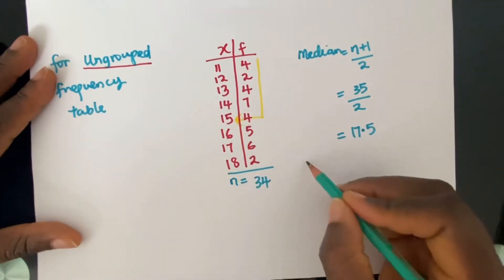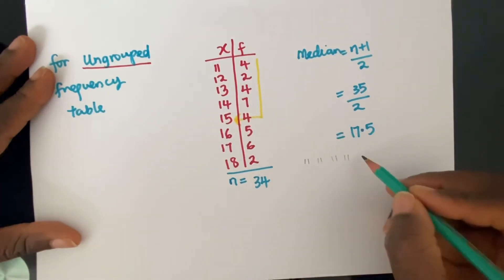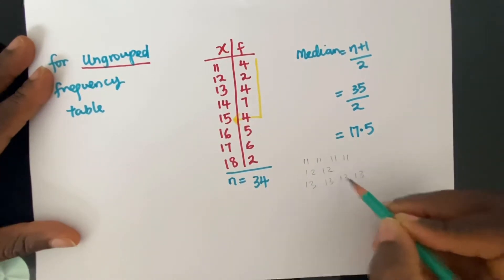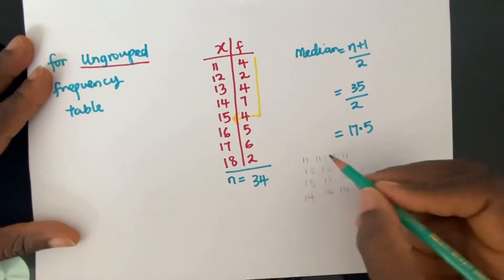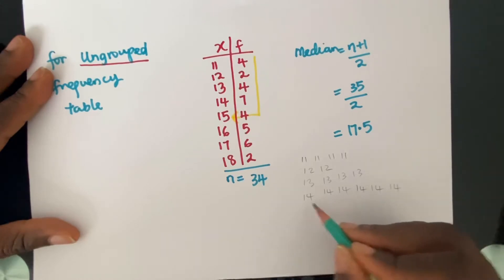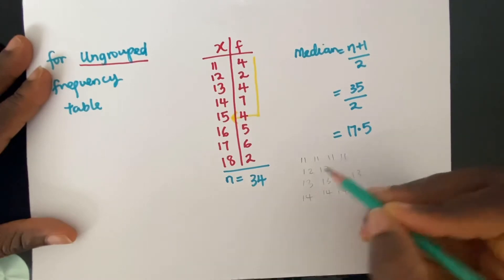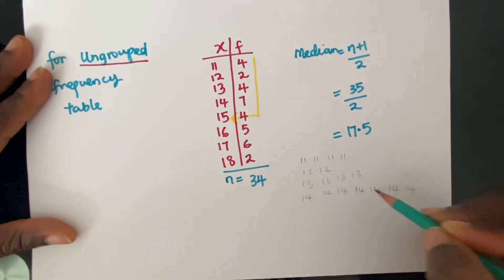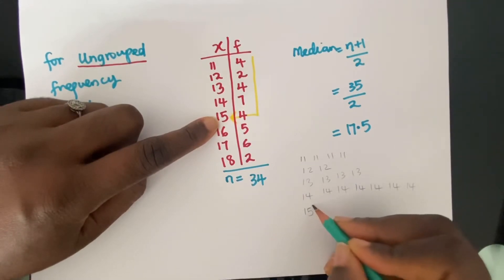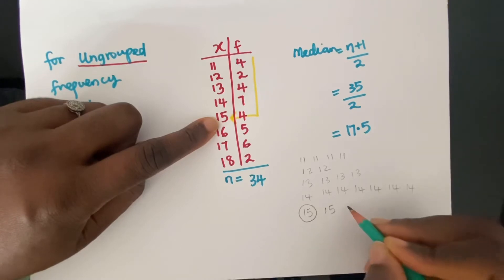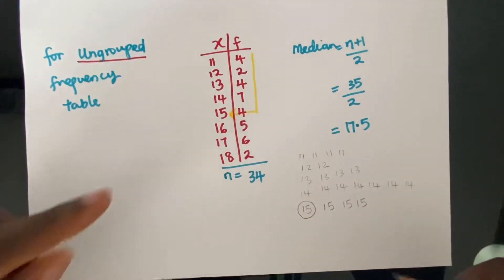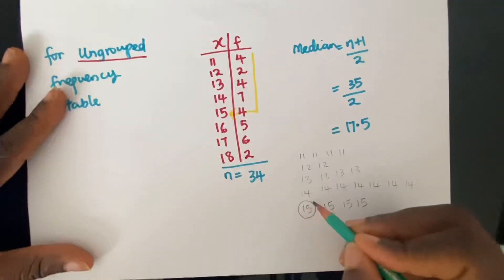Remember, on your frequency table, what this represents is all of your data arranged in ascending order — so it's not the frequency, it's the data. So what this means is you have 11 four times, then 12 twice, then 13 four times, then 14, 14, 14, 14, and so on. When you start counting up, 17.5 then comes down to the next one, which is 15. So it's the 15th data value — that would be the median.